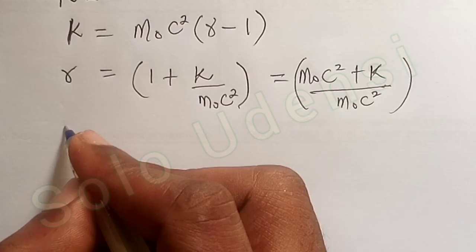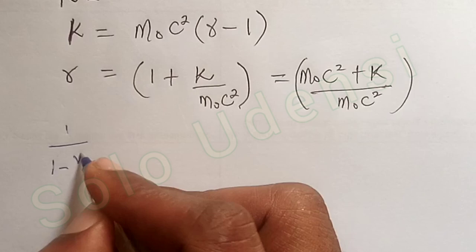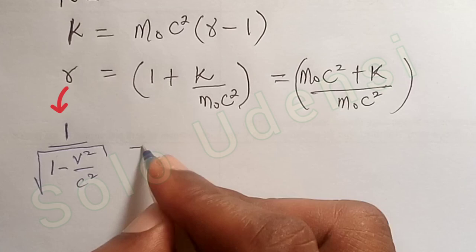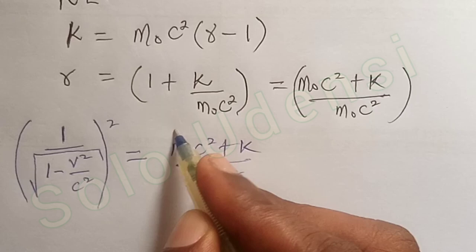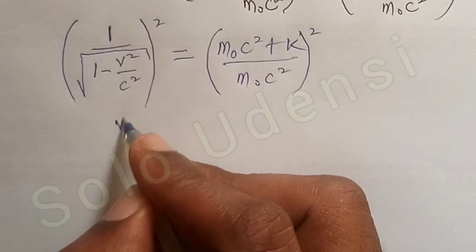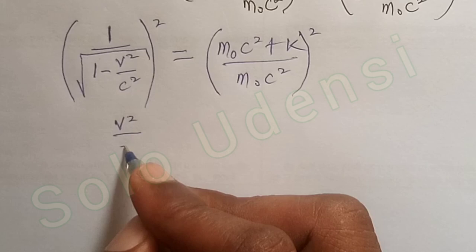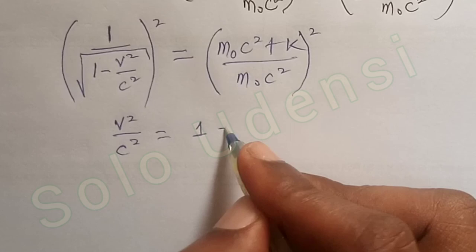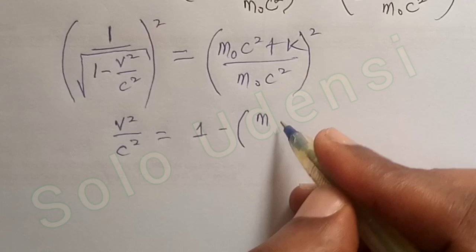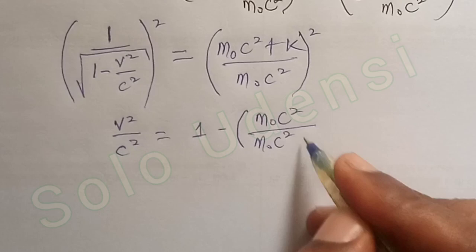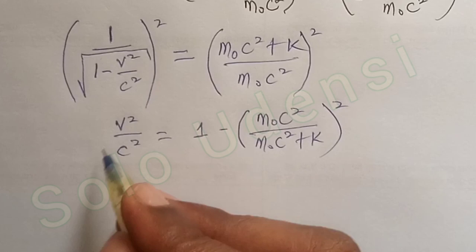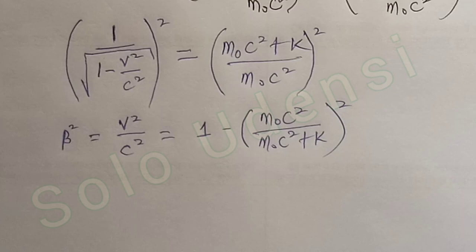1 over the square root of 1 minus v²/c² equals gamma, so 1 minus v²/c² equals 1 minus (M₀c² over M₀c² + K) all squared. And this quantity is beta squared, since beta is defined as v over c.